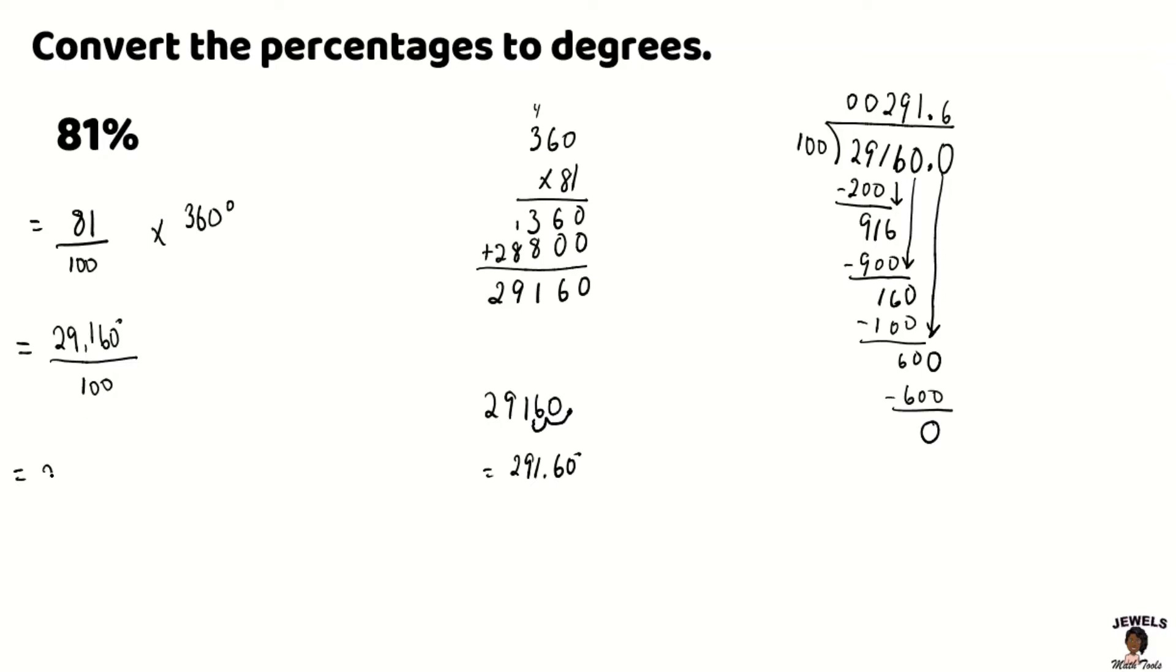So again, you can see that when we perform our long division, we still ended up at the exact same answer. So my percentage 81% in degrees is equal to 291.6 degrees. Okay, so there you have it.